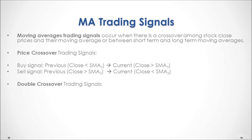We also have double crossover type of trading signals, in which we have a buy signal if the previous short-term exponential moving average was less than the longer-term exponential moving average, and then the current short-term exponential moving average is greater than the long-term exponential moving average.